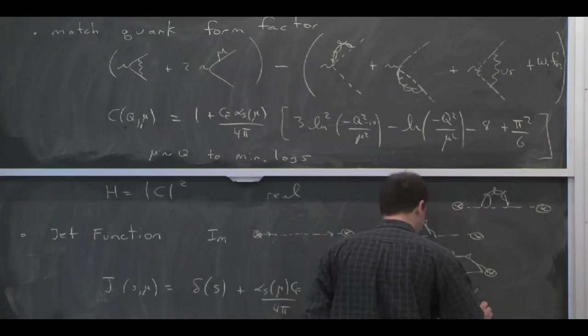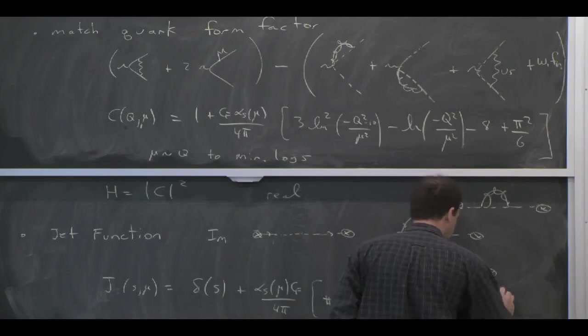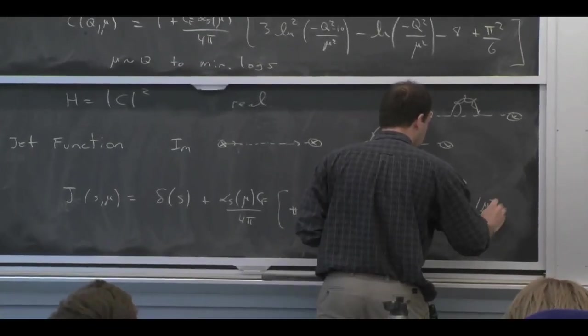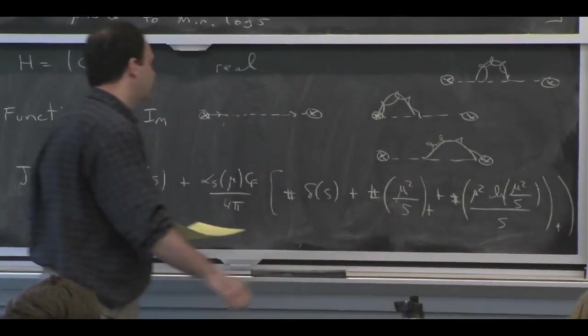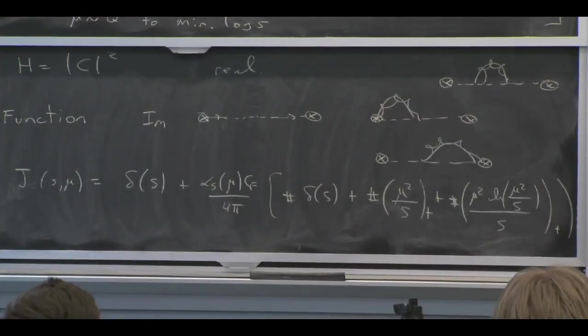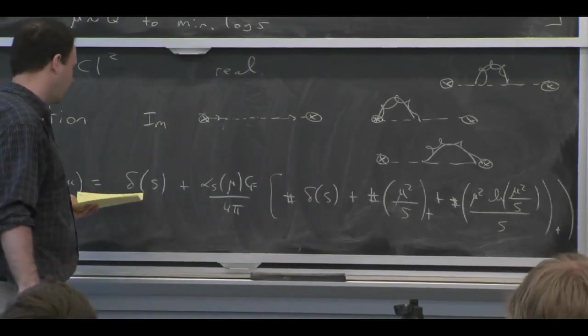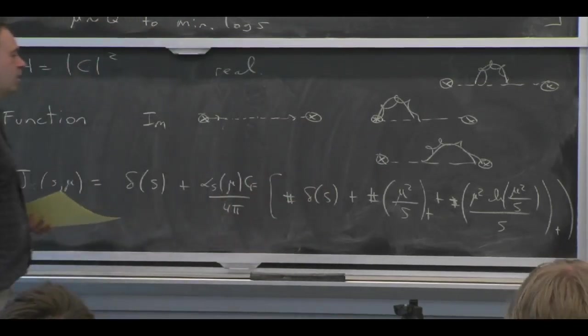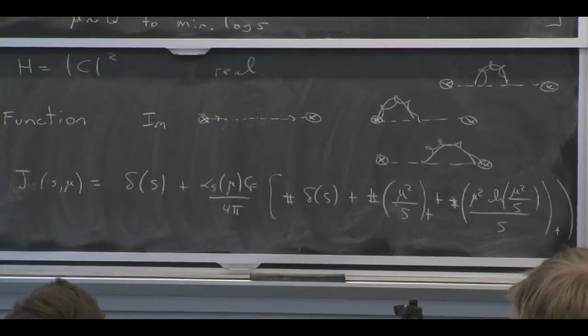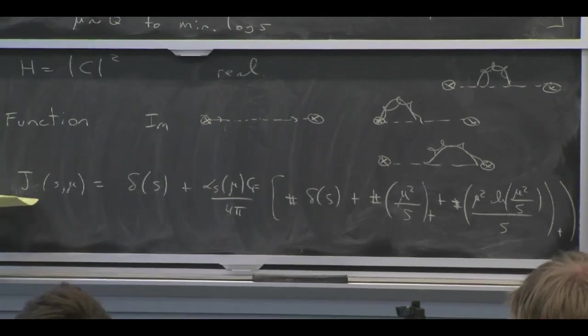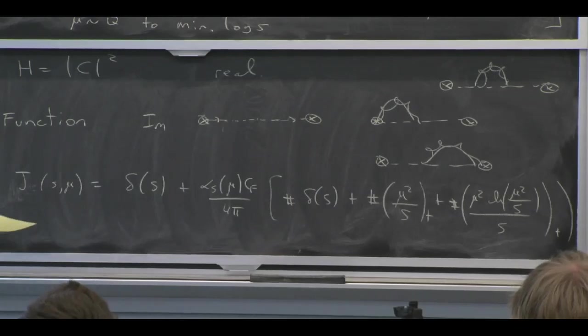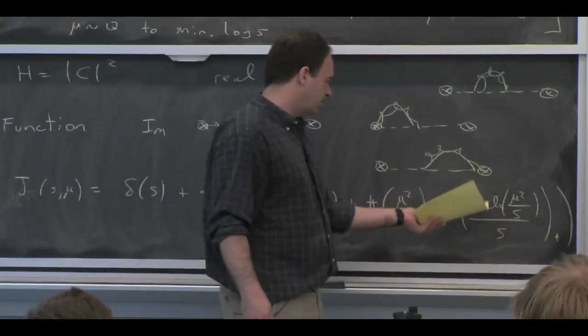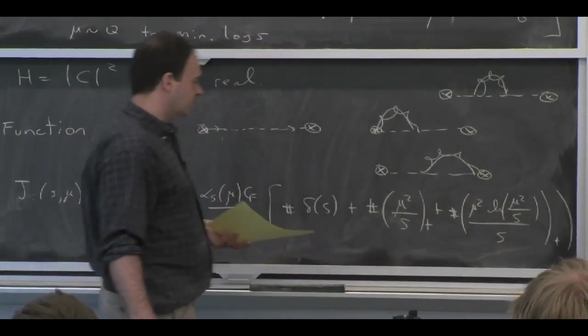So let me not worry so much about what the numbers are, and just tell you what the result looks like. Looks like that. There's three different types of terms that one could get. They all kind of have a power counting that makes them go like 1 over S. And that you know ahead of time. If you power count the operator here, it should scale like 1 over S. These are the different kind of structures that you can get at one loop that scale like 1 over S. And this is kind of a symptom of there being 1 over epsilon squared divergences.